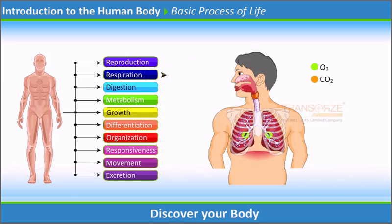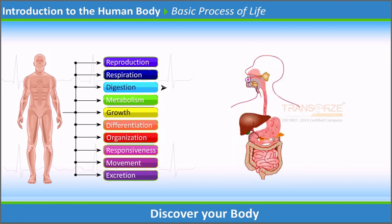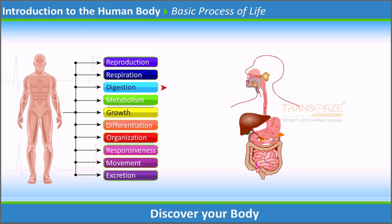Respiration is the process of exchange of oxygen and carbon dioxide between the cells and the external environment. Digestion is the process of breaking down complex ingested foods into simple molecules that can be absorbed into the blood and utilized by the body.